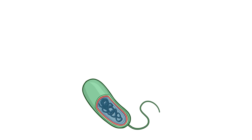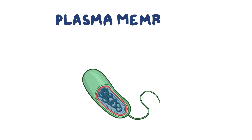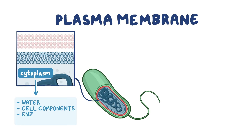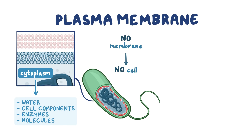Underneath the bacterial cell wall, there's the plasma membrane, which is the most important layer because it encloses the cytoplasm — a gel-like substance composed mainly of water that also contains cell components, enzymes, and various organic molecules. If the plasma membrane is removed, the cell's contents spill into the environment, and the cell no longer exists.